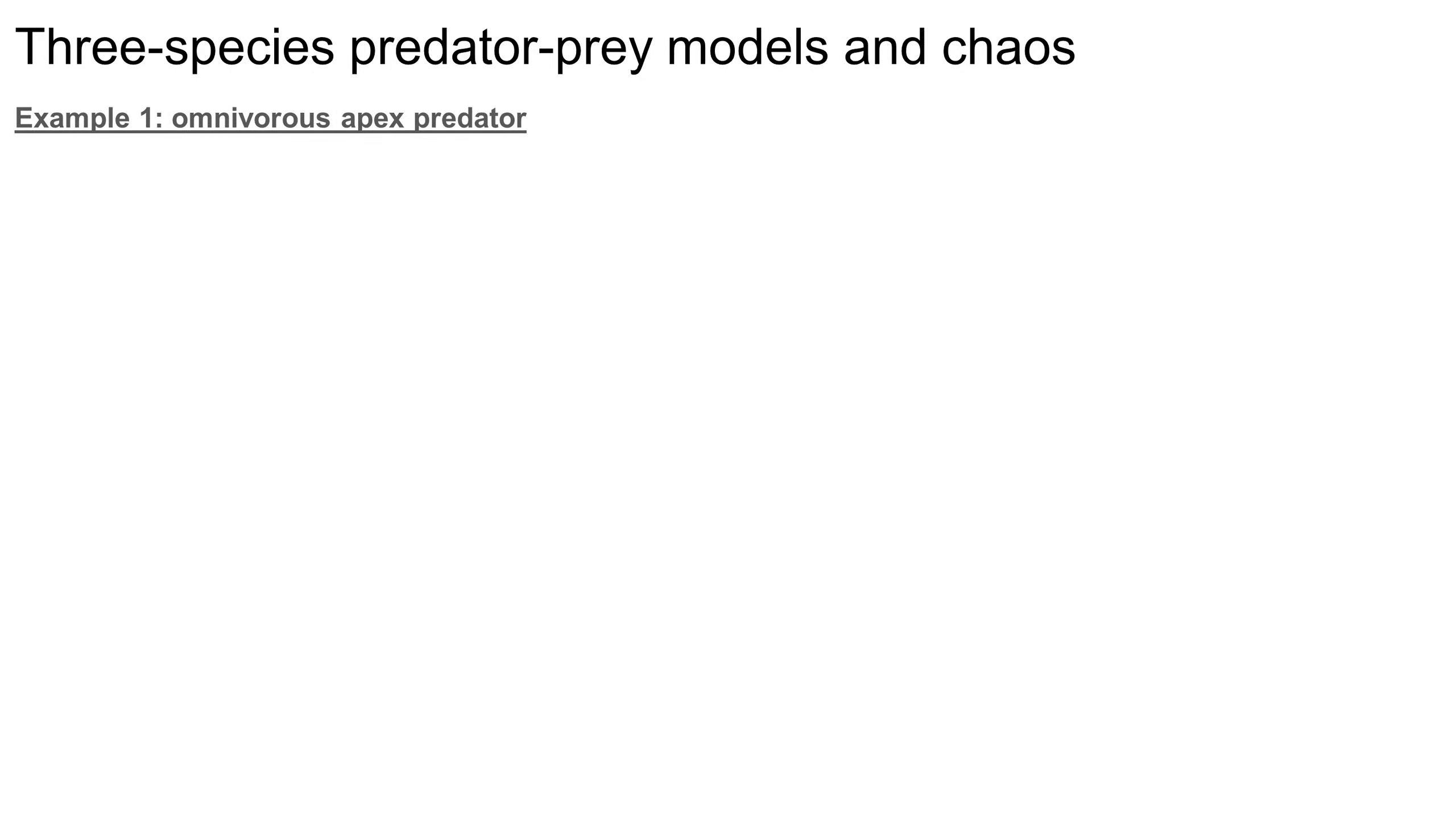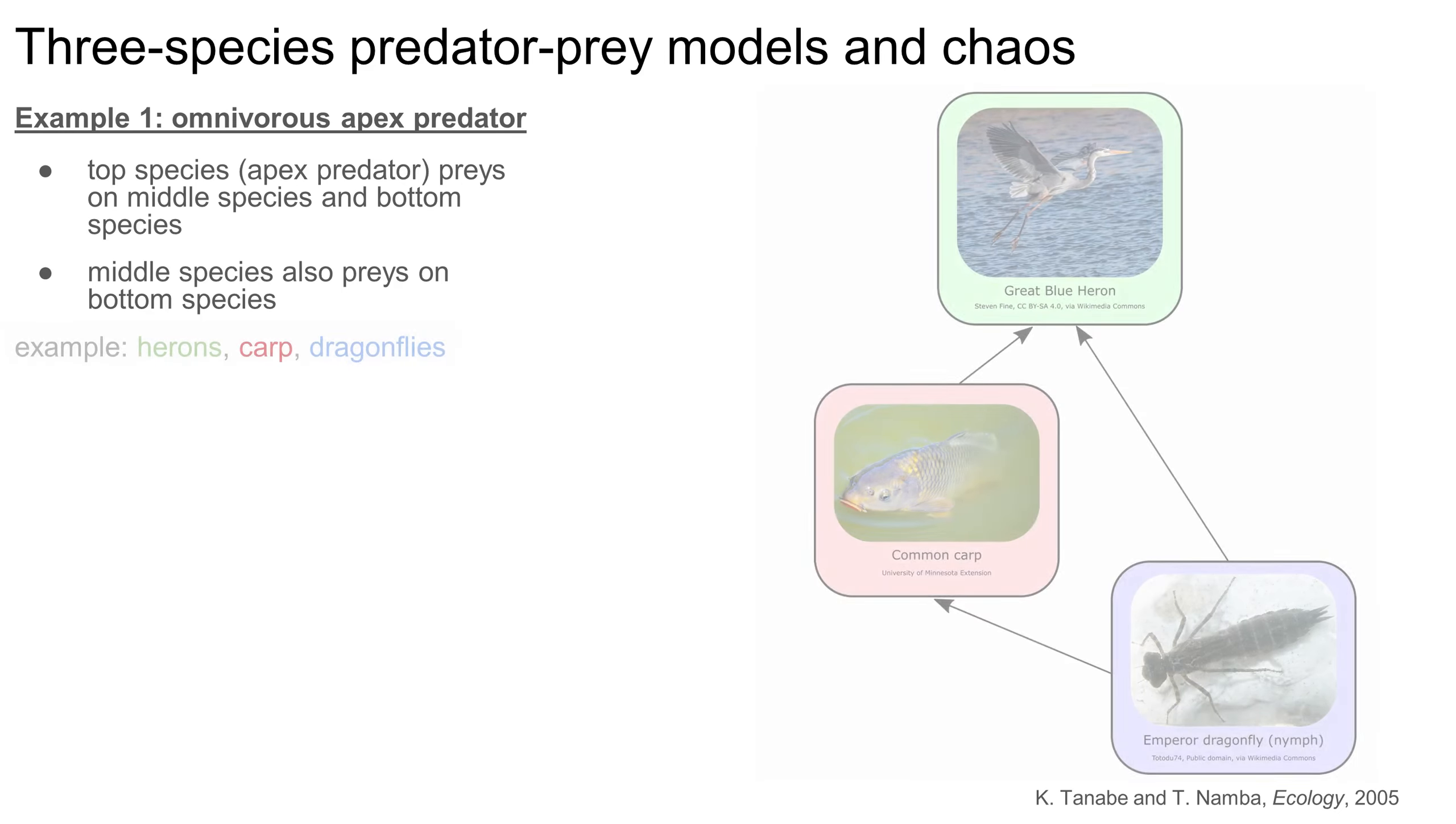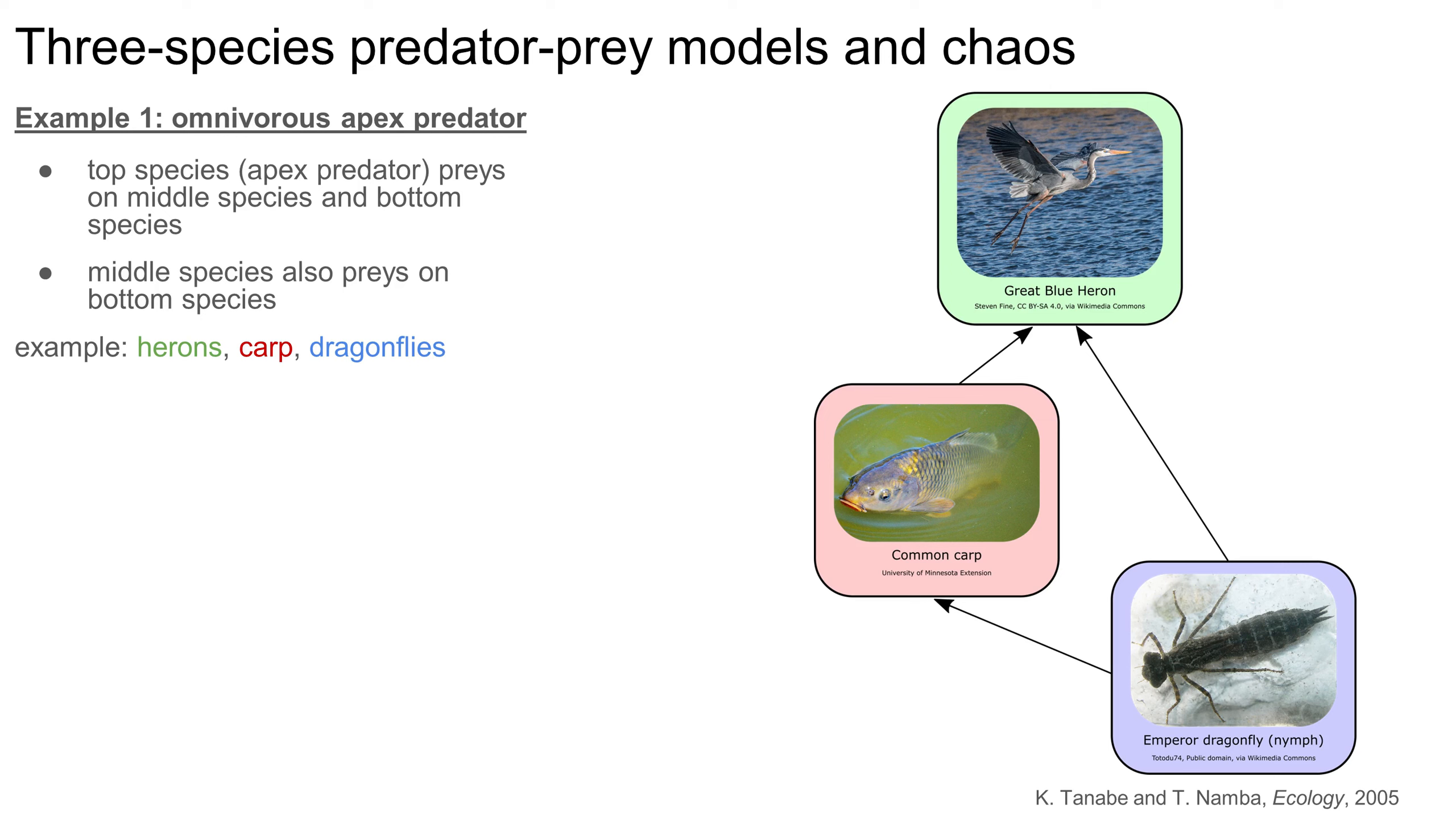One example of a three-species food web involves an omnivorous apex predator. This species is at the top of the food web, and it preys on both the middle species and the bottom species. The middle species also preys on the bottom species. This example comes from a 2005 ecology paper by Tanabe and Namba, and there's a link to it in the description if you want to read more. One example of omnivory is a food web consisting of great blue herons who like to eat fish, including carp. Carp, in turn, will eat insects such as dragonflies. Great blue herons will eat just about anything they can, including dragonflies. So, we have a three-species food web consisting of herons, carp, and dragonflies.